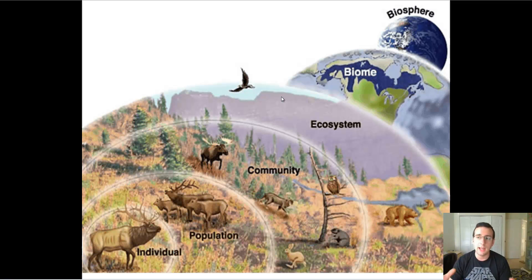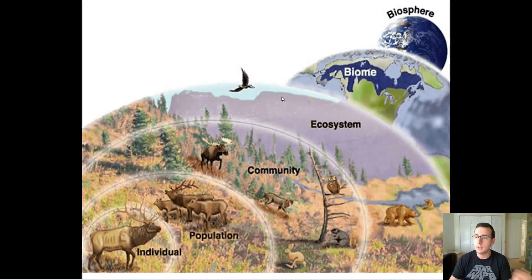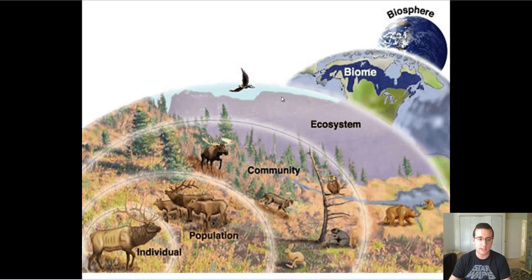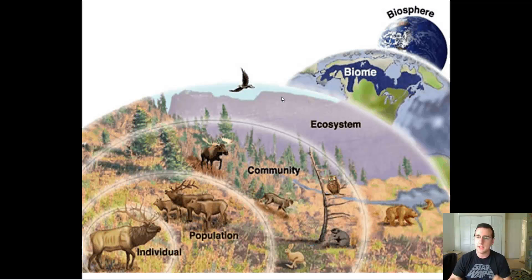Those are the levels of life. But once you start looking at populations of organisms — that means organisms of the same species — you're already starting to hit what is called the ecological levels of organization. So an individual is an organism, but when you get several organisms of the same type, you're going to have what is called a population.